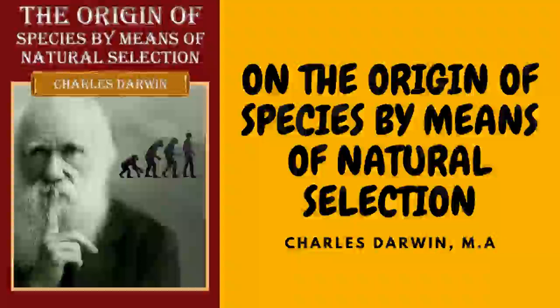The principle of selection enables the agriculturist not only to modify the character of his flock, but to change it altogether. It is the magician's wand, by means of which he may summon into life whatever form and mold he pleases. Lord Somerville, speaking of what breeders have done for sheep, says: 'It would seem as if they had chalked out upon a wall a form perfect in itself and then had given it existence.' That most skillful breeder, Sir John Sebright, used to say with respect to pigeons that he would produce any given feather in three years, but it would take him six years to obtain head and beak.